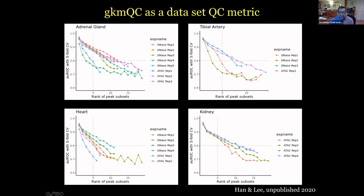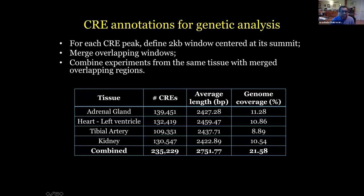We've done this for the adrenal, the tibial artery to give us some idea of the endothelial component, the heart, and the kidney. Here is a summary: these are the four tissues, the number of cis elements identified, and the total number. As all of you know, there's overlap between them, which is why they don't simply add up. Typical length turns out to be more or less the same. Each individual tissue gives us about 10% genome coverage in these cis elements; combined, it's about 20% — so we're using information on one-fifth of the genome to understand what genetic variation means.